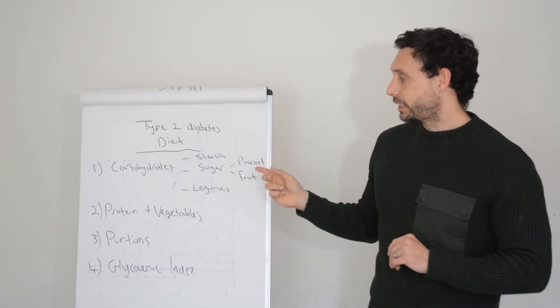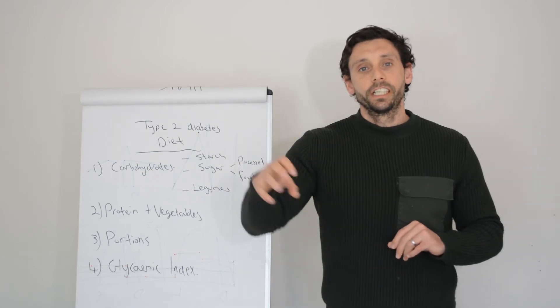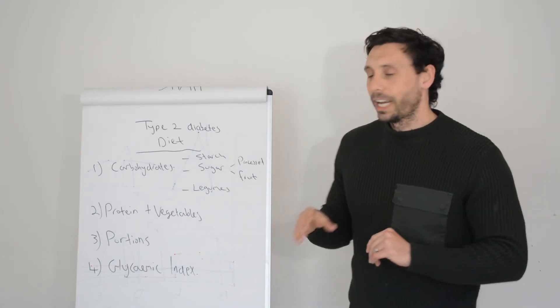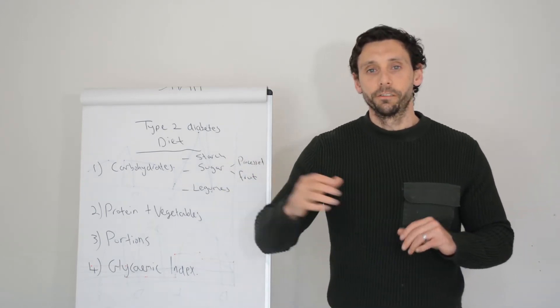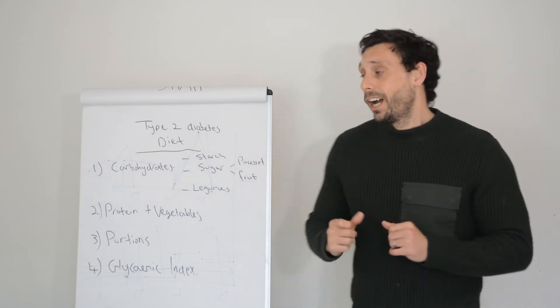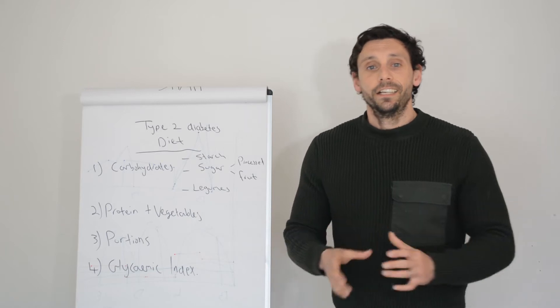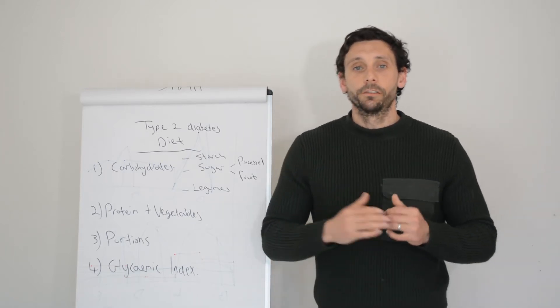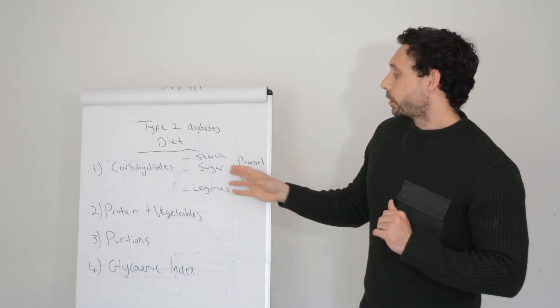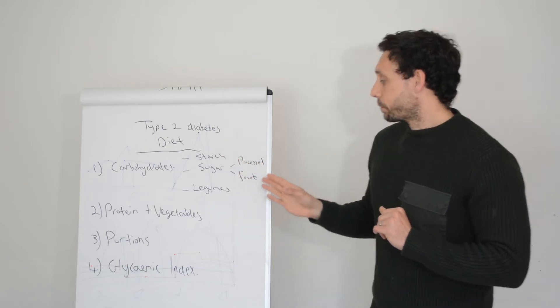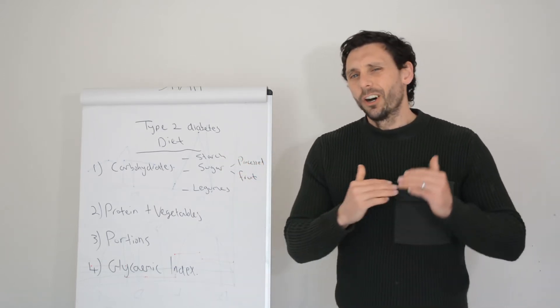So carbohydrates is really an umbrella term. All of these foods have potential to increase your blood glucose levels, some less than others. The starch and the processed sugars are the big hitters. If you're having a problem with your blood glucose levels, particularly after meals, it's more than likely going to be related to the starch or the sugar.